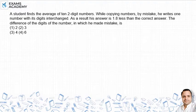Hello friends, a student finds the average of 10 two-digit numbers. While copying numbers, by mistake he writes one number with its digits interchanged. As a result his answer is 1.8 less than the correct answer.